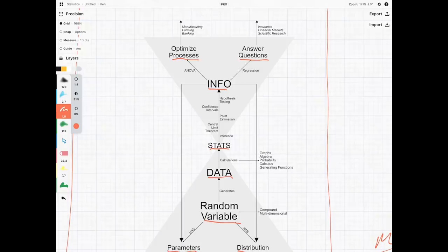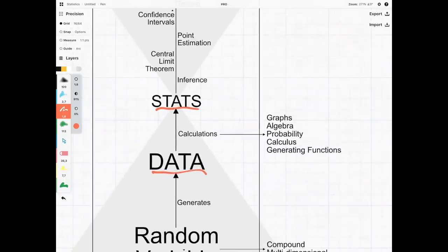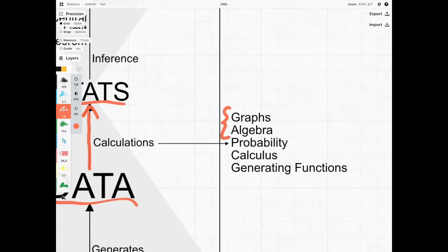Now what we're going to be doing in course one is we're going to be looking at this link of going from data to statistics. And we're going to be using two forms of very basic maths known as graphs and algebra.